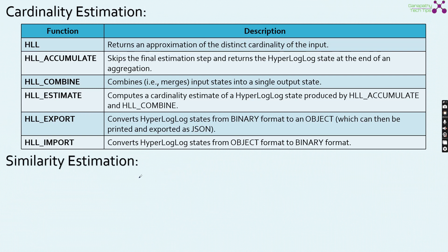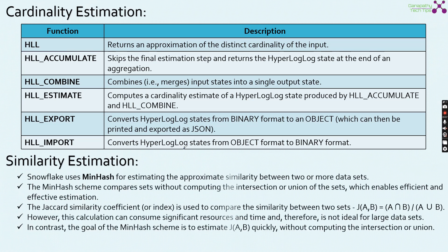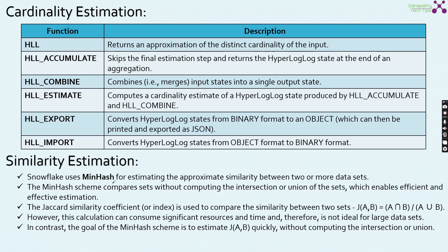Moving on to similarity estimation. In Snowflake, it utilizes the MinHash algorithm for estimating approximate similarity between two or more data sets. The MinHash scheme compares the sets without computing the intersection or union of the sets, which enables efficient and effective estimation. Obviously, if you want to compare two sets, you would typically use the Jaccard similarity coefficient — A intersection B divided by A union B — where A and B are two different data sets.